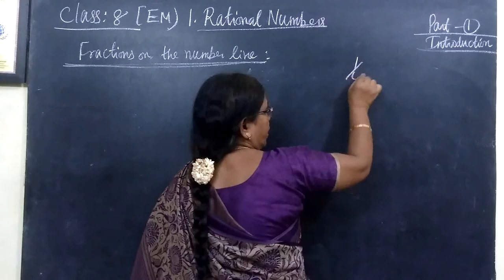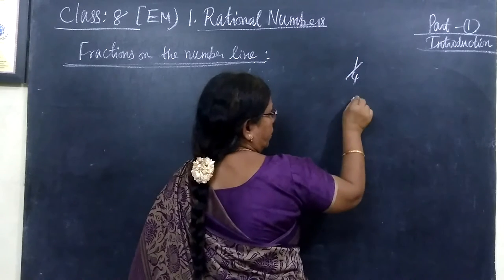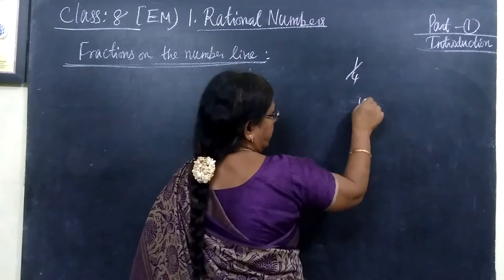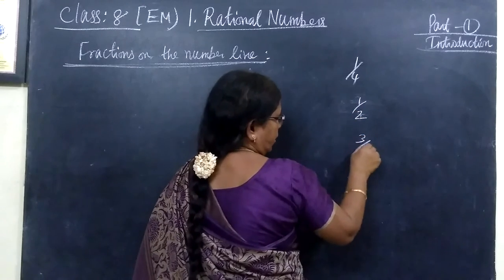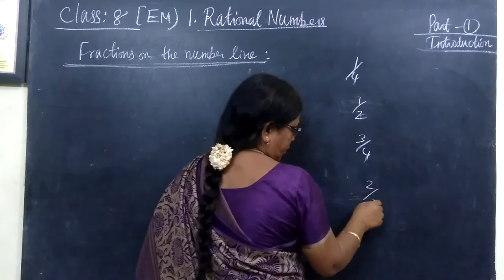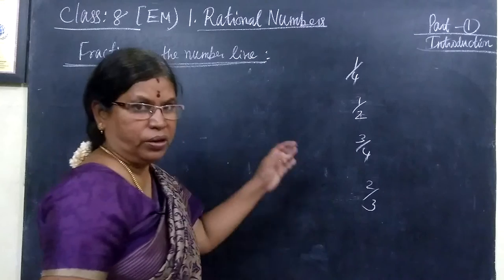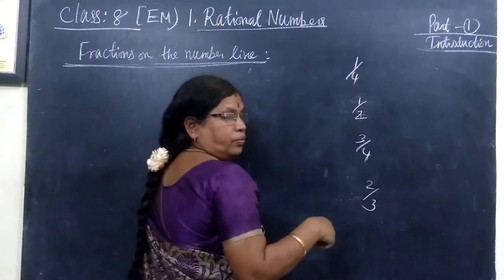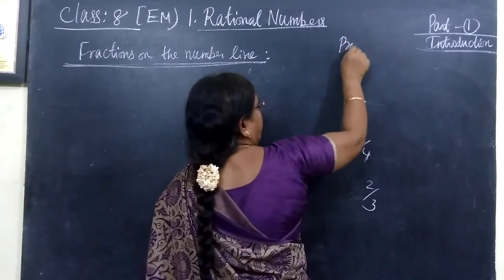Actually we know that fraction 1 by 4 then 2 by 4. 2 by 4 can be written as 1 by 2 then 3 by 4. Then some other 2 by 3. What are all given in the book only. All these are we know these are all proper fractions.